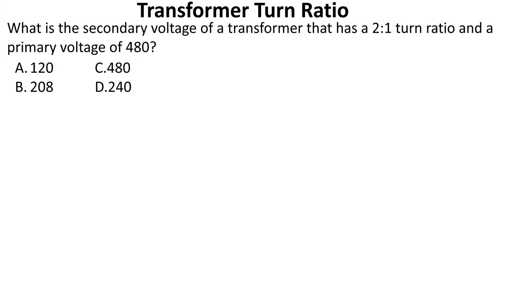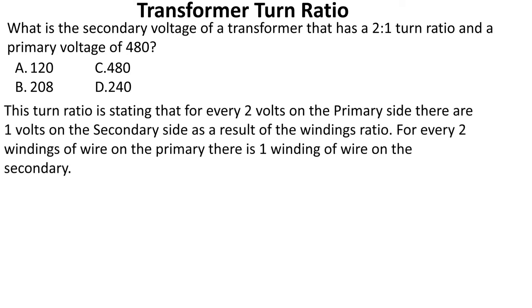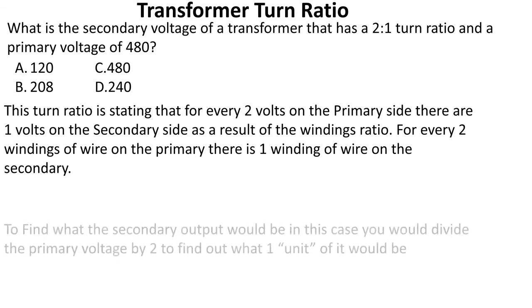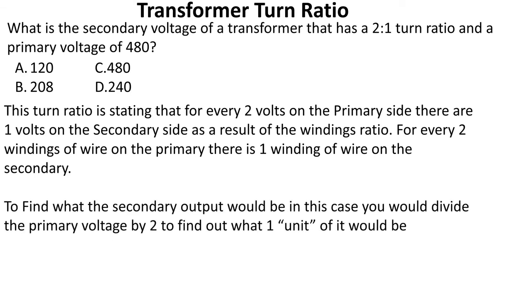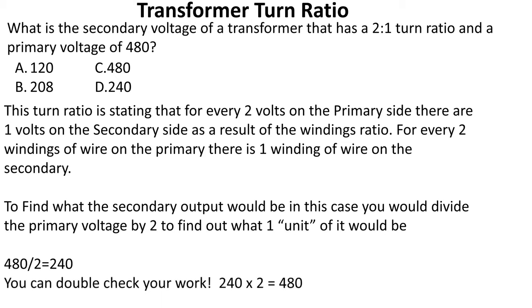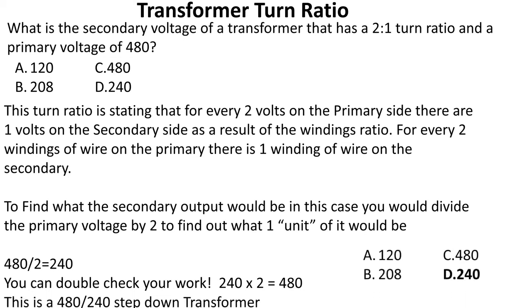What is the secondary voltage of a transformer that has a two-to-one turn ratio and a primary voltage of 480? This turn ratio states that for every two volts on the primary, there is one volt on the secondary. For every two windings on the primary, there is one winding on the secondary. Divide 480 by two to get 240. Double-check: 240 times two brings us back to 480. This is a 480-to-240 step-down transformer. We select D.